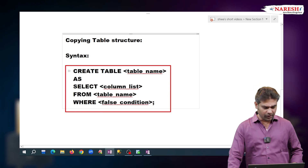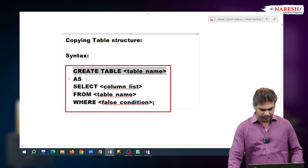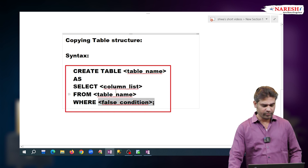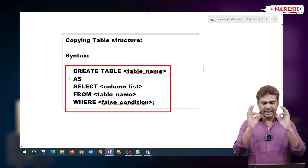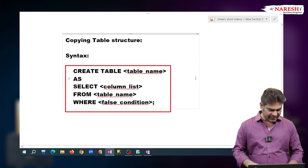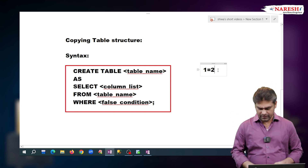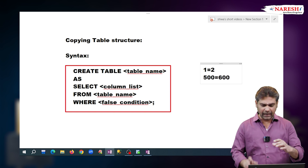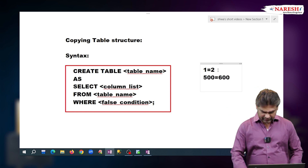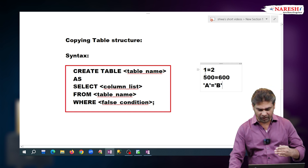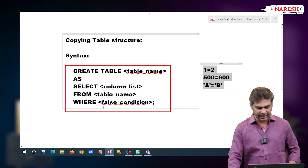For copying table structure, we have to follow this syntax. Write CREATE TABLE, then the table name, then AS, and write the SELECT query here. When writing the WHERE condition, write any false condition — a condition that can never be true. For example, 1 equals 2 is always false. 500 equals 600 is always false. A equals B is always false. These are called false conditions.